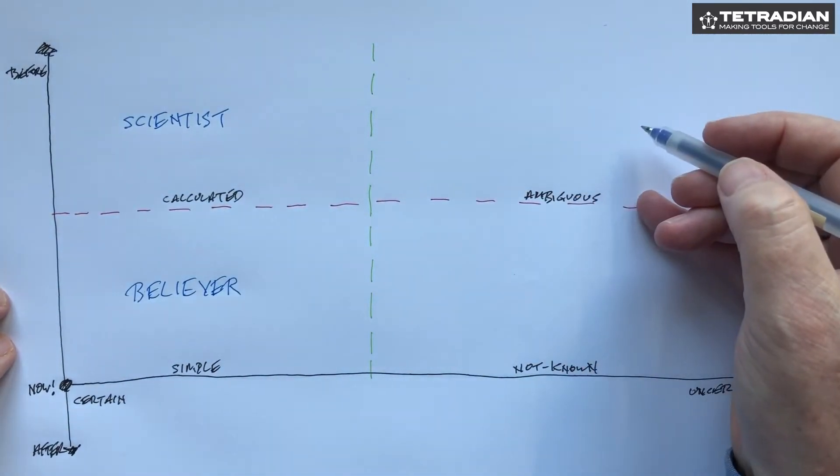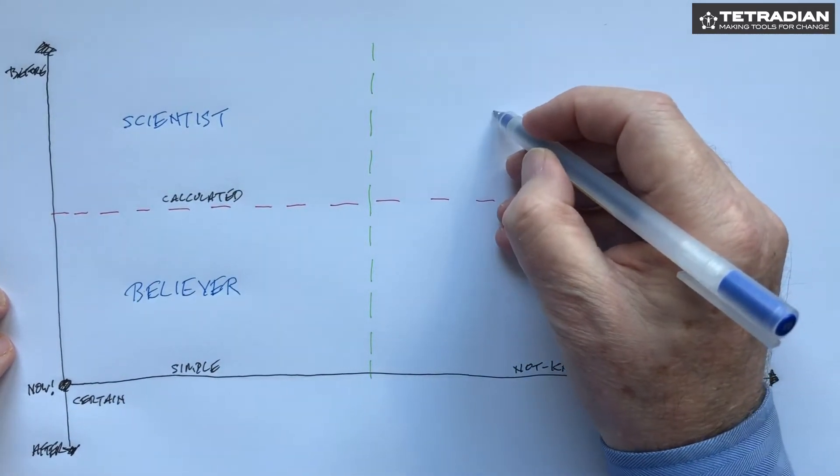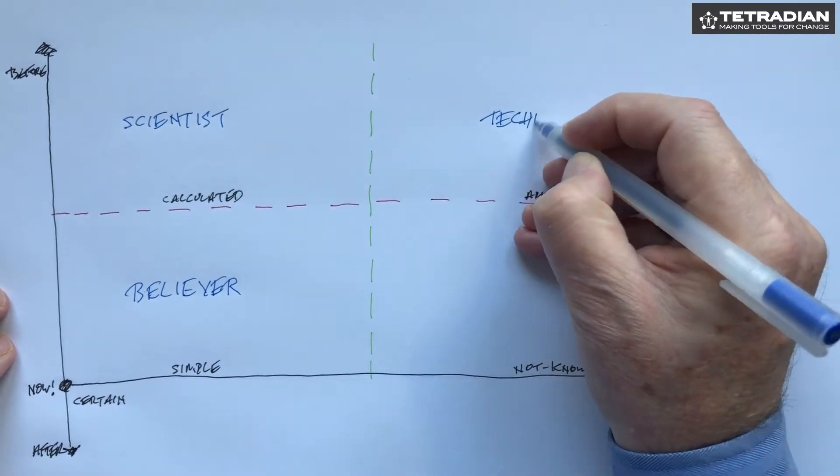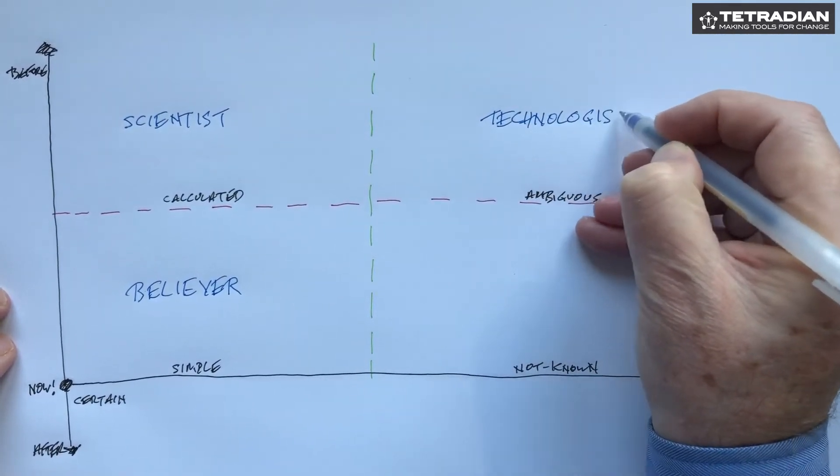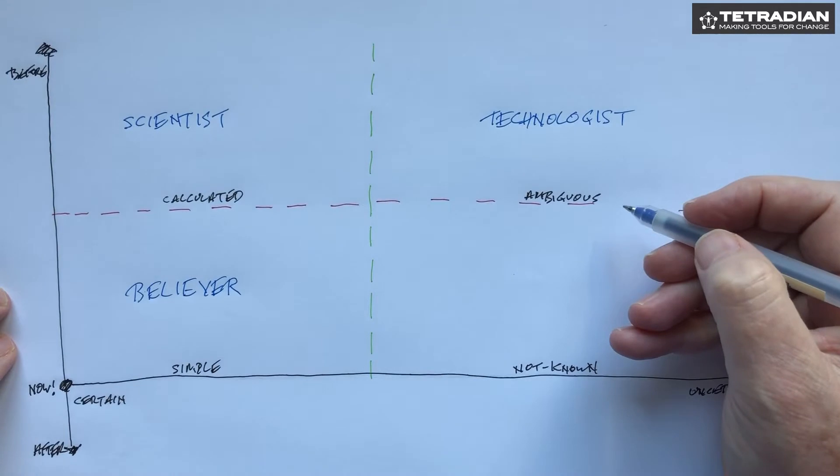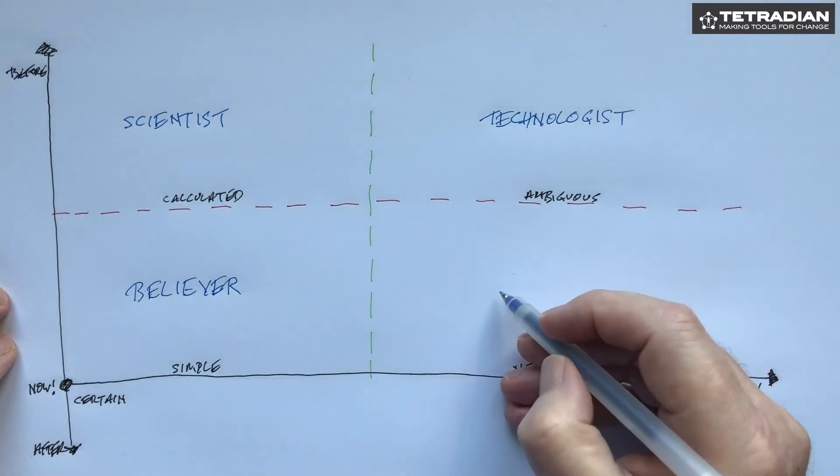On the other side dealing with uncertainty we've got the technologist, the engineer. The phrase 'it depends' comes to mind, whereas down here we have the artist.